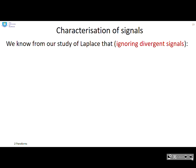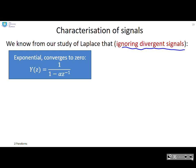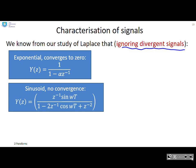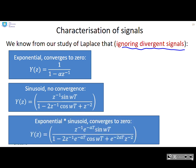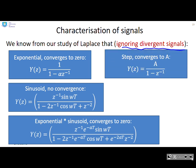We know from our study of Laplace, and I emphasize here ignoring divergent signals, if you have an exponential, it's going to converge to 0. If you have a sinusoid, it doesn't converge, it just oscillates forever. If you have an exponential times a sinusoid, it converges to 0. If you have a step, A over 1 minus Z inverse, it converges to A.